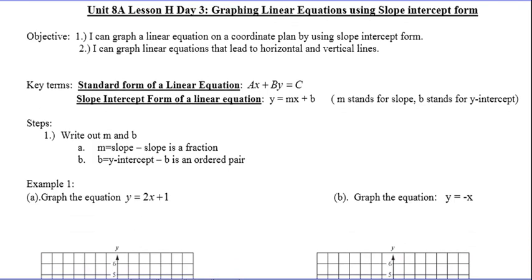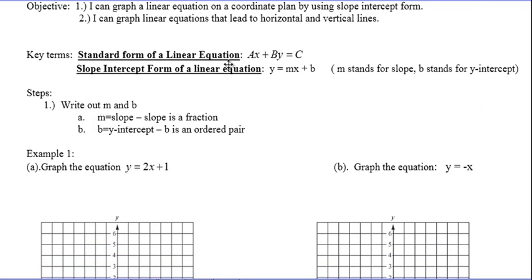A couple things before we get started. Something you've heard from us before, slope-intercept form is when you have y by itself, so it's y equals mx plus b. Yesterday you saw a lot of problems that were in standard form where x and y were on the same side.